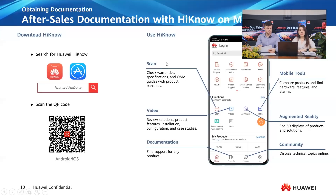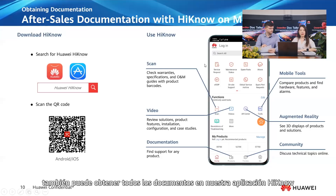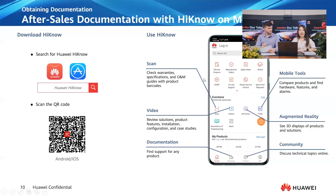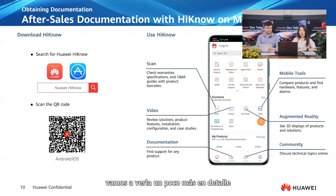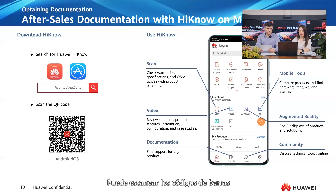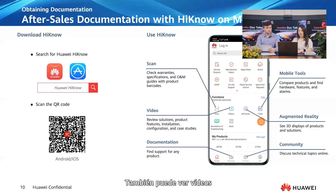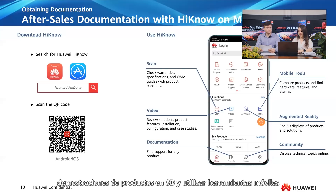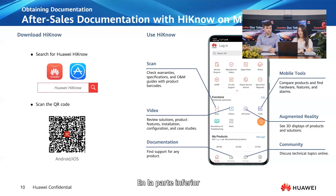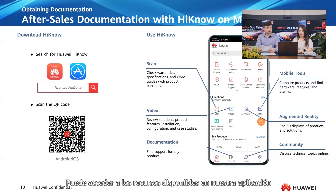If you are using your phone, you can also get your documents on your HiNo app. As you download this app, let's go into a bit more detail about it. Here, you can scan product barcodes to check warranties, specifications, and O&M guides. Also, you can watch videos, 3D product demonstrations, and use mobile tools. At the bottom, you can find product documents and discuss technical topics in the forums. You can access the resources available on our app anytime, anywhere.